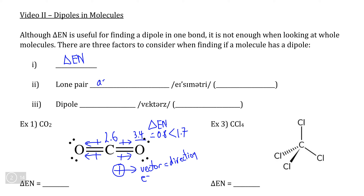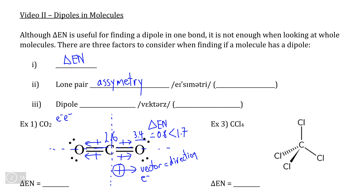The second factor we need to consider is something that we call lone pair asymmetry, or lone pair symmetry. Asymmetry is the noun form of asymmetrical, which means not the same on either side. So when we take a look at carbon dioxide, we can draw a line of symmetry separating the molecule into left and right halves. We can also draw a line of symmetry separating the molecule into top and bottom. We know that electrons have a negative charge, so we can measure whether one side of the molecule has more negative charge than the other by looking at the distribution of lone pairs. If we look on the right side of the molecule, we see there are two lone pairs. Likewise, on the left side, two lone pairs.